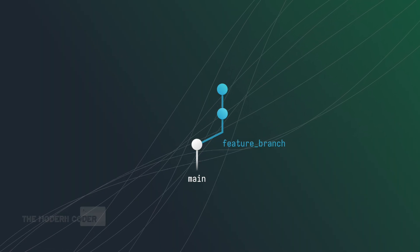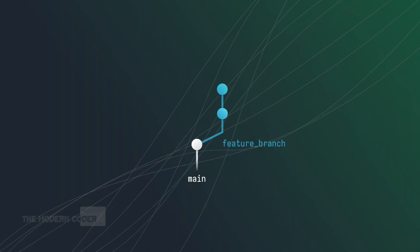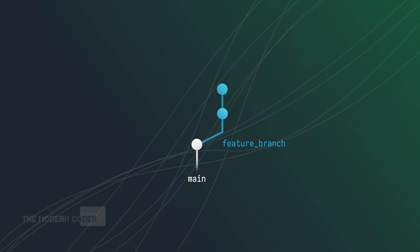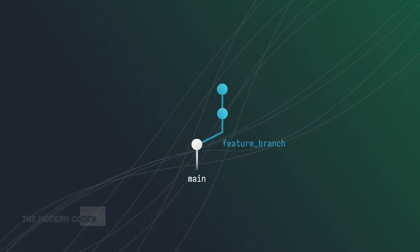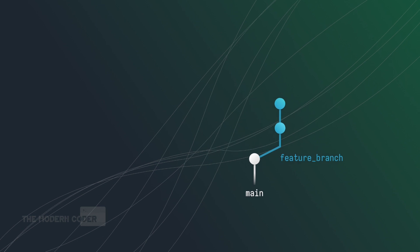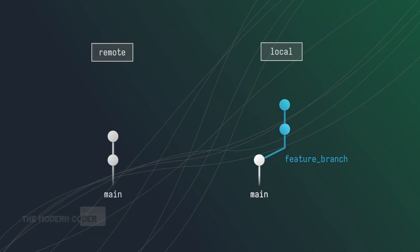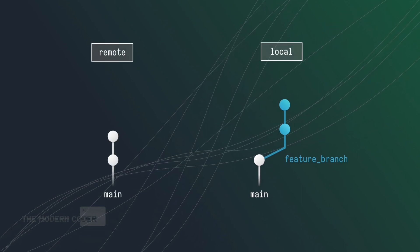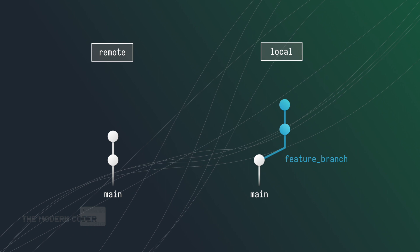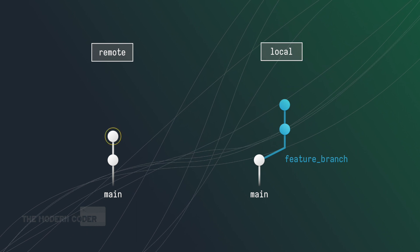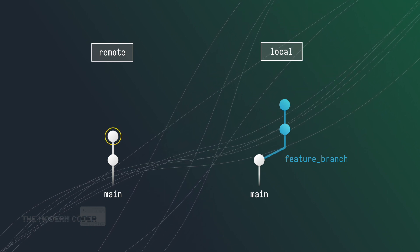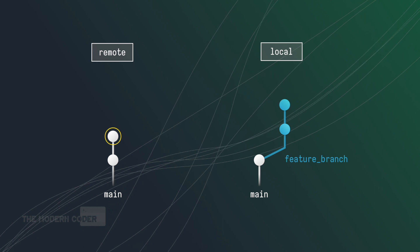Let's start with a basic git repository with a single feature branch. This feature is done and we're going to have to merge those changes back onto mainline. Looking at the remote counterpart of this repository, you can see there's been a commit pushed to mainline by another contributor after we split off to work on our feature branch.